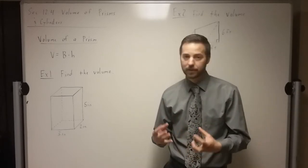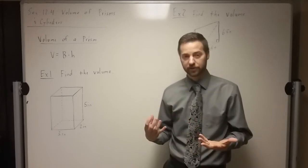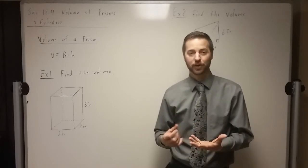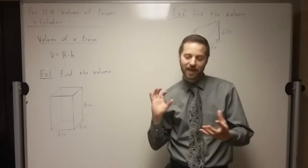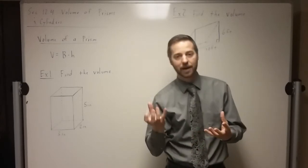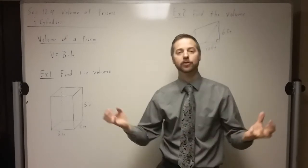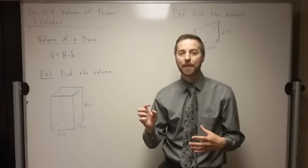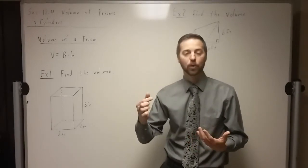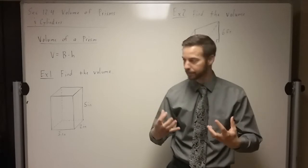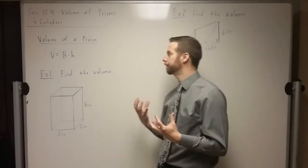Now some shapes a cube doesn't fit in perfectly — when we get to cylinders, for example, you can't put square blocks into a circular object. So you kind of think of it as fluid. If those blocks could move, how many of that amount in a 1 by 1 by 1 block would it take to fill that shape? That's what we're talking about here with volume.